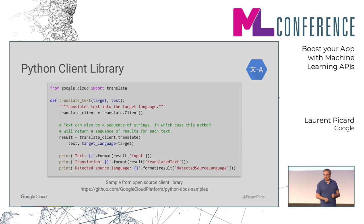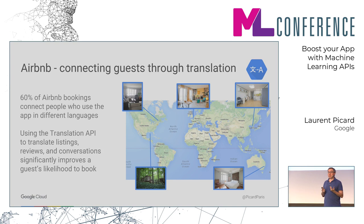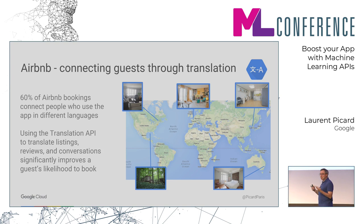Here's another Python example — still that simple. You create a client and you call translate. In this code I actually have more comments than code — there are two lines of code needed. An example with Airbnb: 60% of the bookings they do are with users who don't speak the same language. They use the Translation API to translate virtually everything — the listings, the reviews, and also the communications between users. Thanks to that, they significantly increased their likelihood to make a reservation.